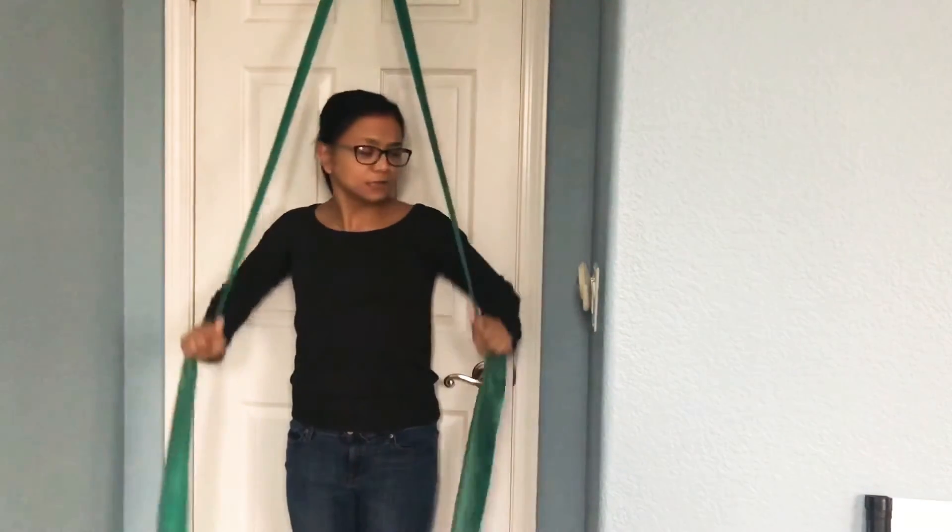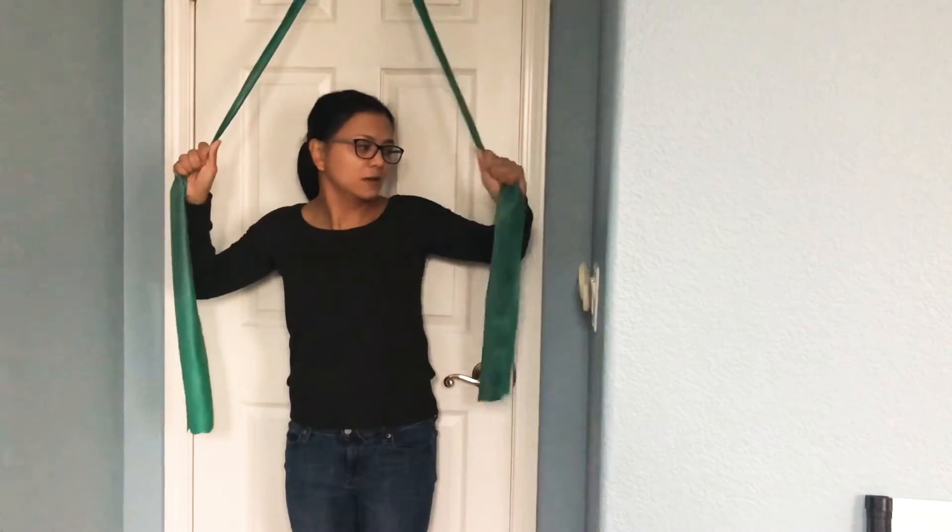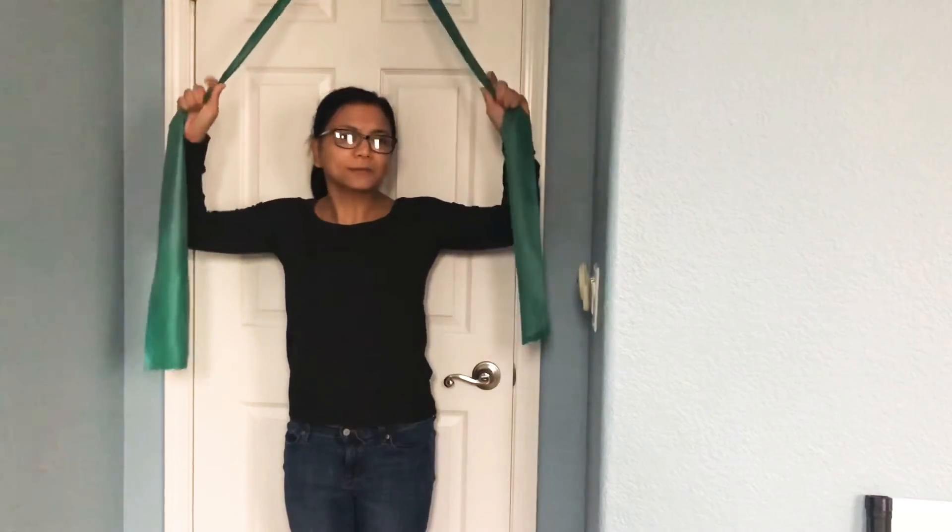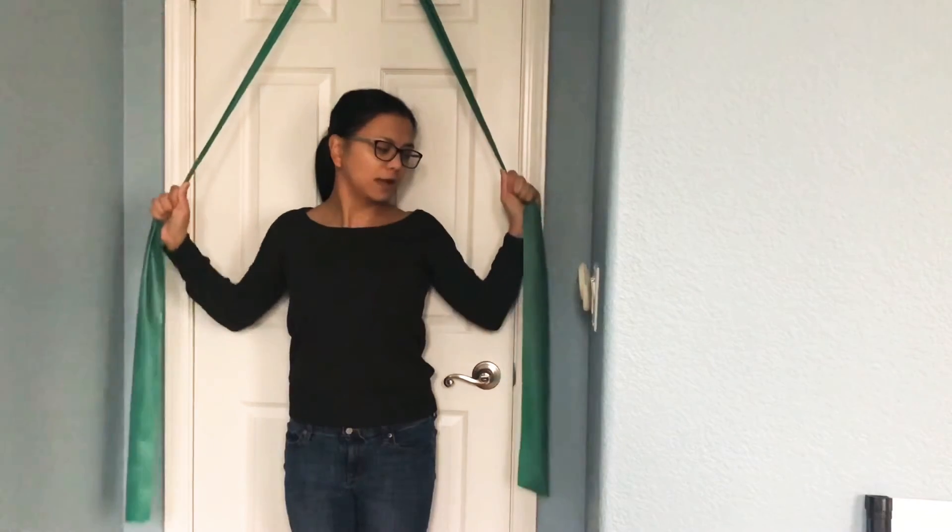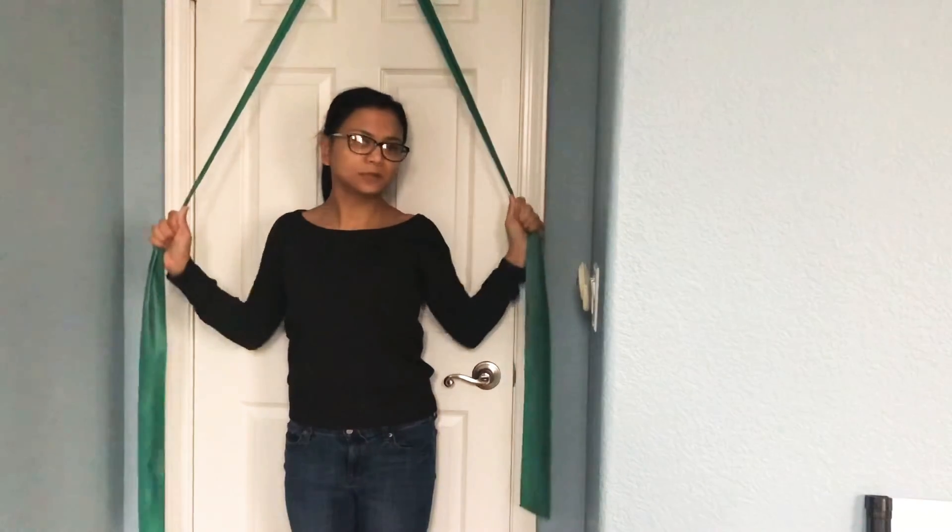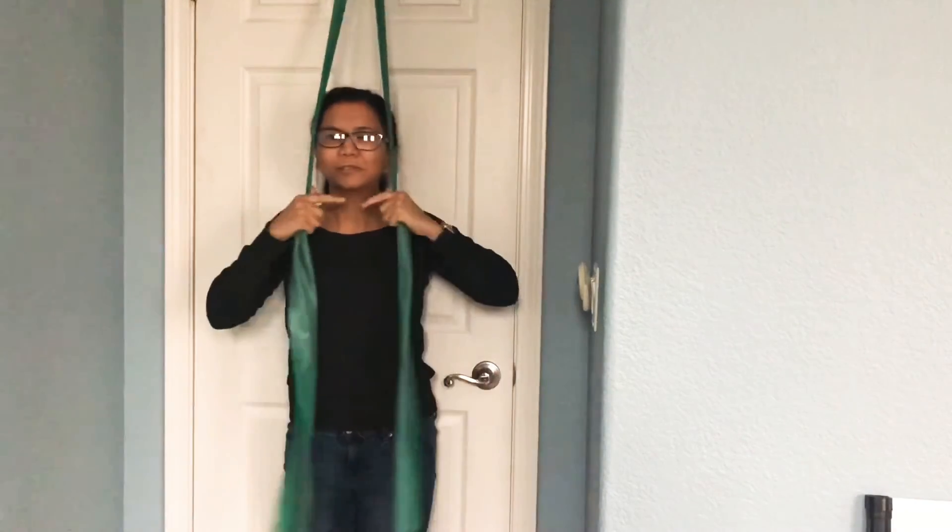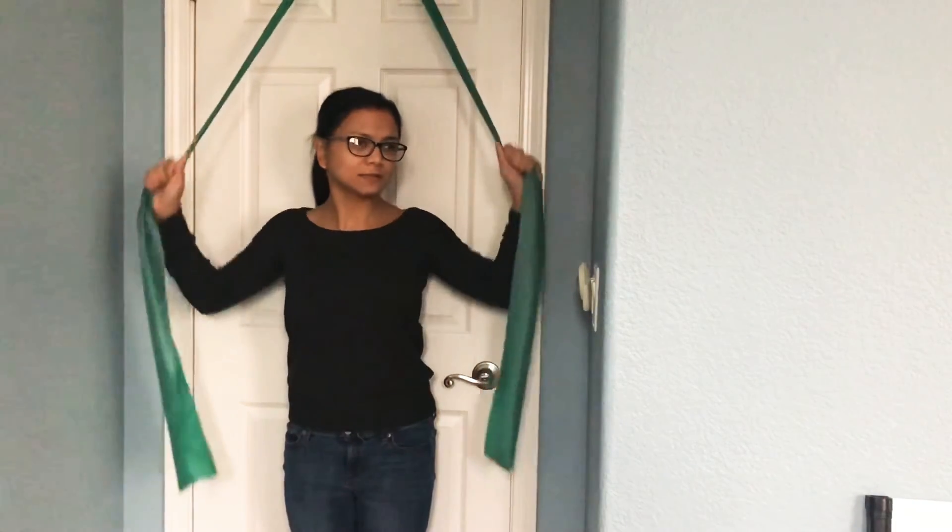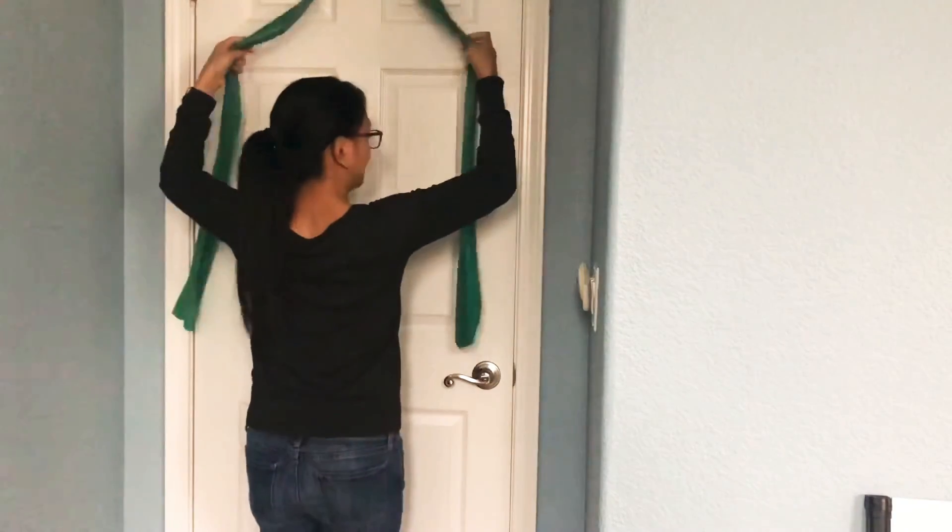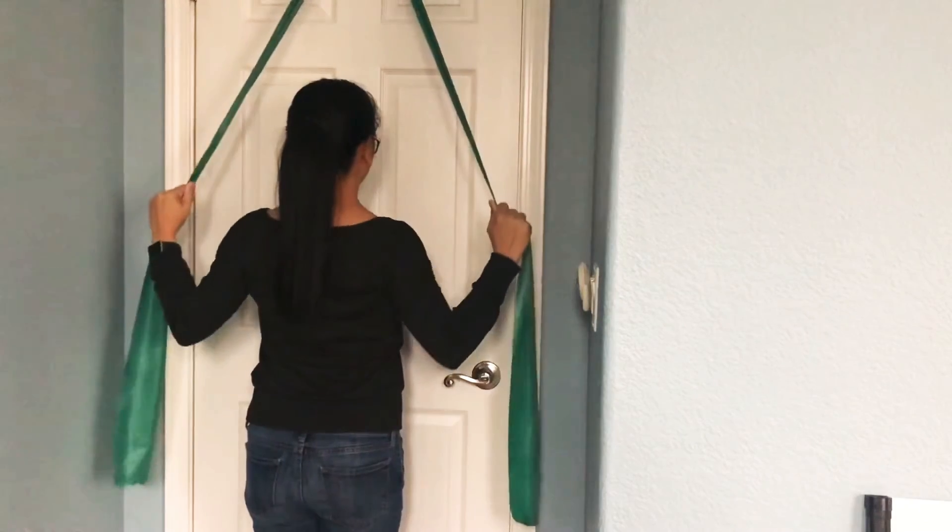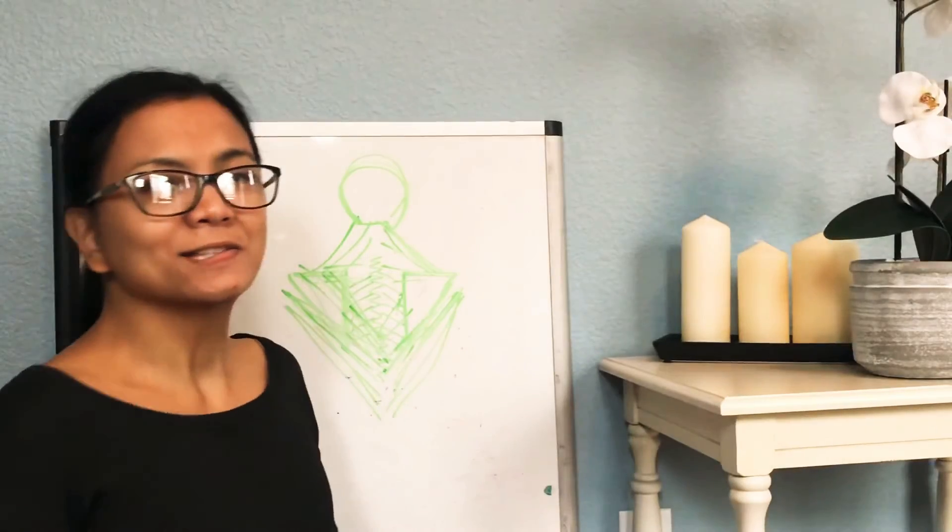When you do that, you're internally rotating your shoulders. You really only have to go up to here. I always tell people elbow to your rib cage, just like that. You're only going to go this far, maybe chin level. In the back, I'm pulling my shoulder blades down and back as well.